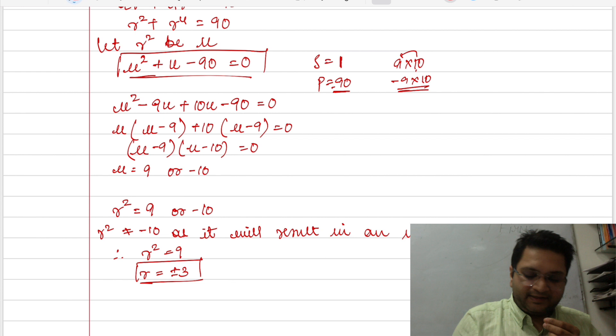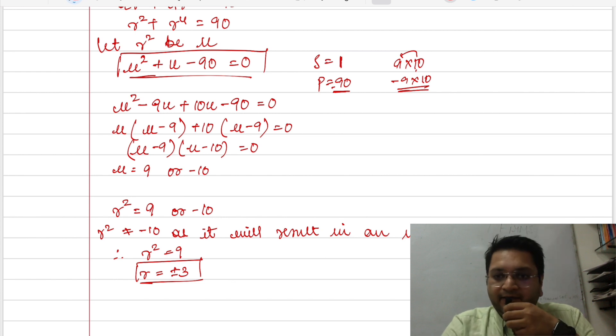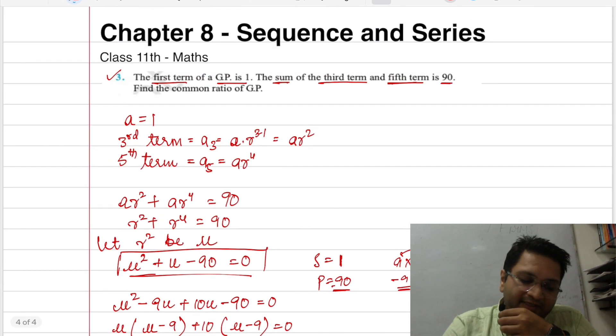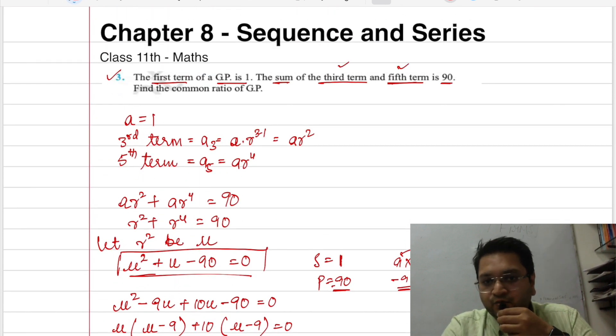r ki value plus minus 3 ho sakti hai. Right? And that becomes the solution for the question. It was quite a simple question. We just took the detail given and solved it. Right?